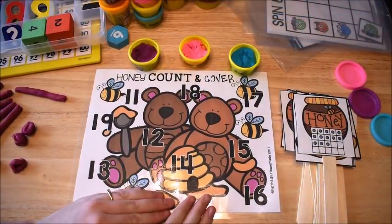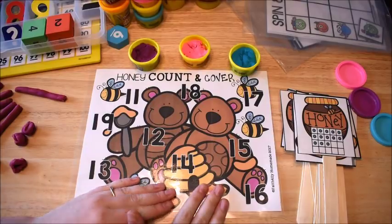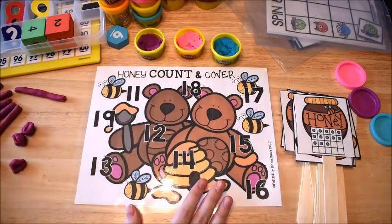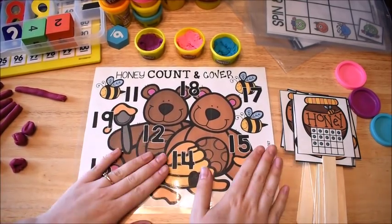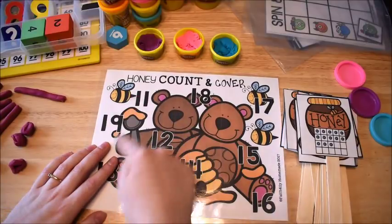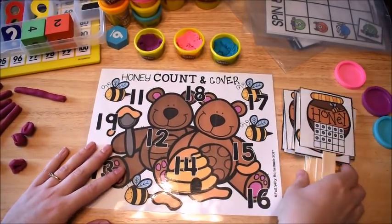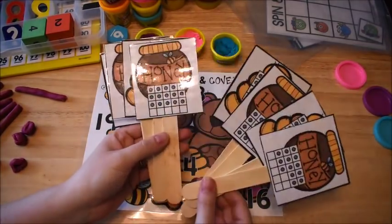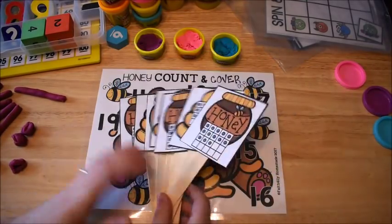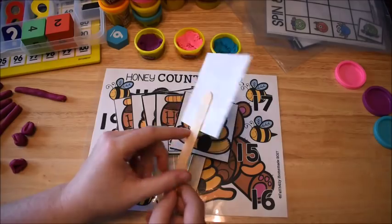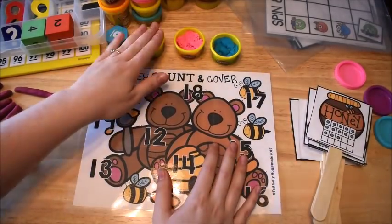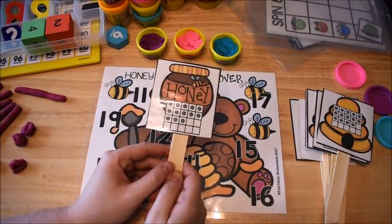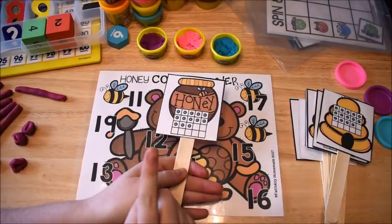Alright, this next activity is also from my early learners math curriculum. This one comes from the unit on teen numbers. I believe it's unit 2 if I remember correctly. And what I have done with this one is there's a mat here and it has numbers on it. Now this is called honey count and cover. So it has honey bears on the mat and then it has the beehives and some of the honey pots.